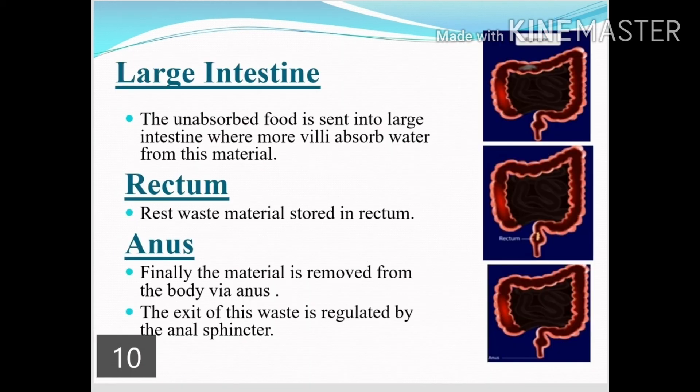After digestion and assimilation, the remaining unabsorbed food is sent into the large intestine, where villi absorb water from the material. After absorbing the water, only the solid waste is left, which is moved to the rectum. The rectum stores the waste material, and finally this material is removed from the body via the anus. The exit of this waste is regulated by the anal sphincter.